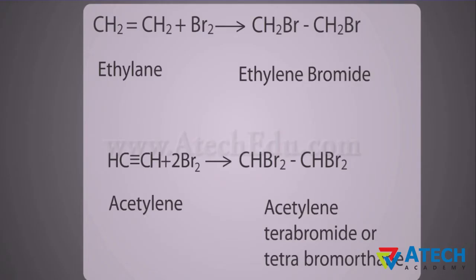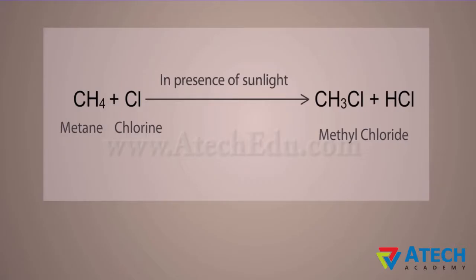For example, when bromine is added to ethyl. In a substitution reaction, an atom or a group present in a compound is replaced by another atom or a group. For example, in a reaction of methane with chlorine in the presence of sunlight, hydrogen is substituted by chlorine and methyl chloride is formed.